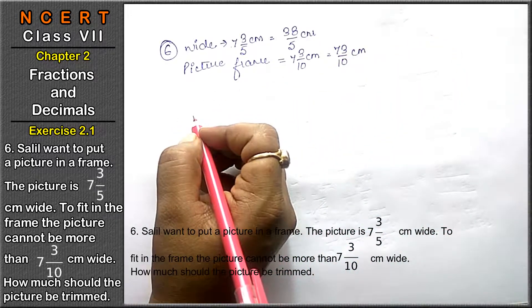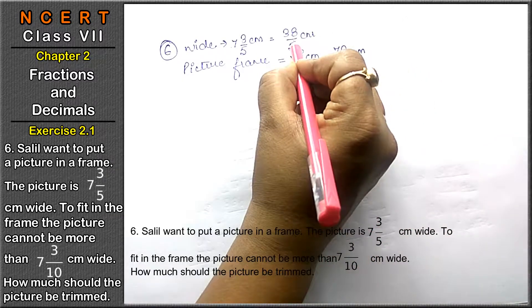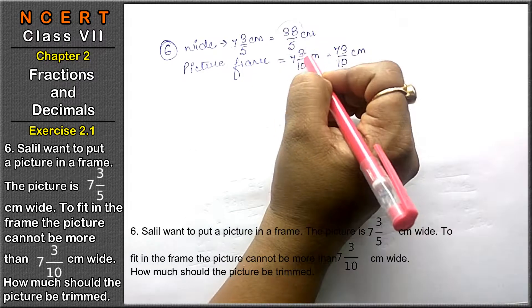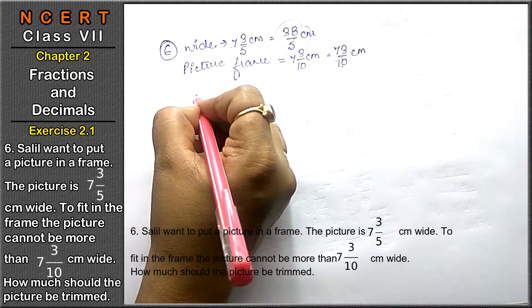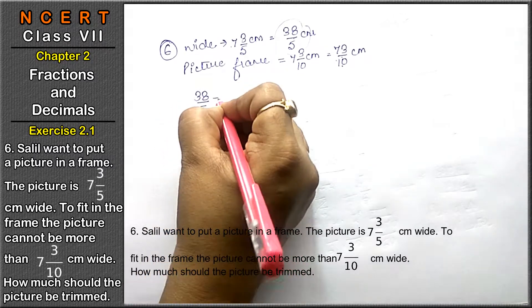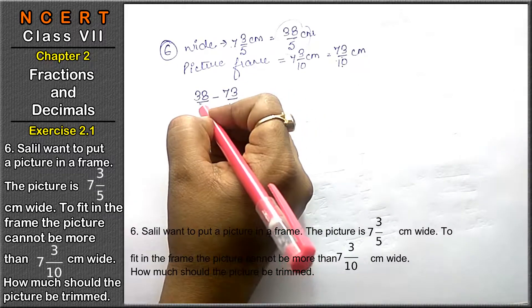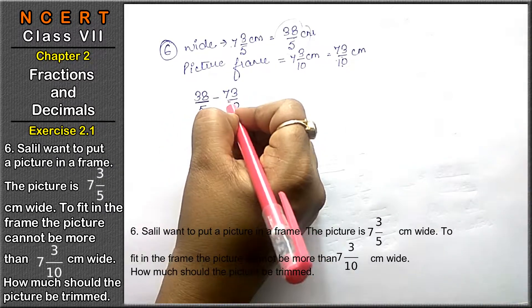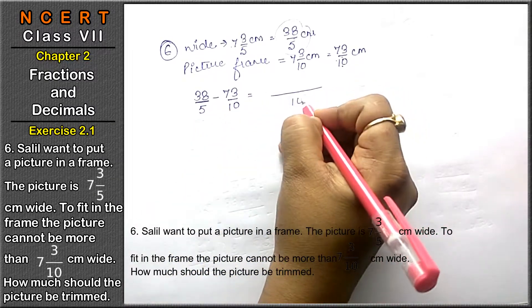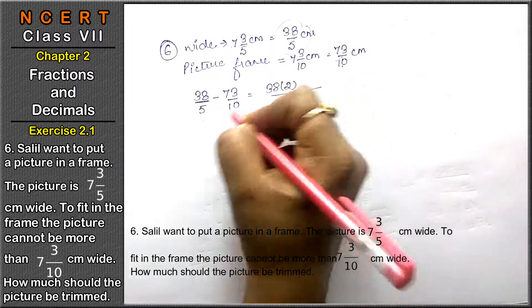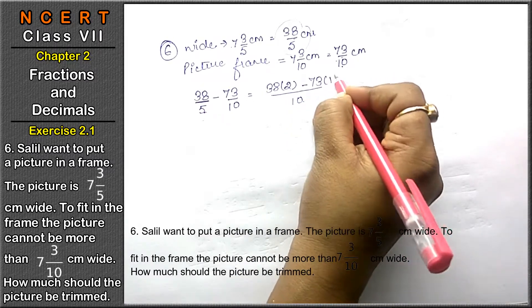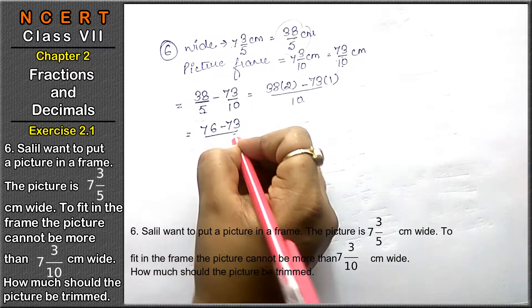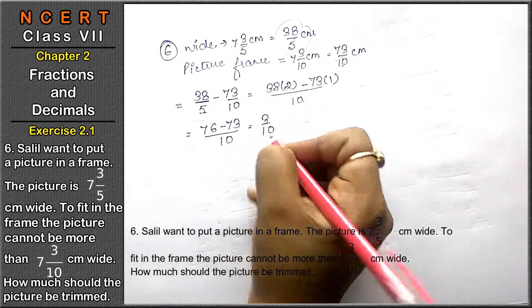How much should the picture be trimmed? Which one is bigger? Picture is bigger and we have to adjust it in a frame. Now we have to deduct it: 38 upon 5 minus 73 upon 10 equals to 76 upon 10 minus 73 upon 10, because the picture is bigger than the frame. That means 3 upon 10 is the answer.